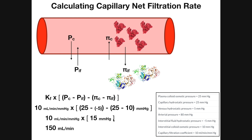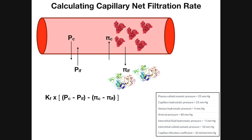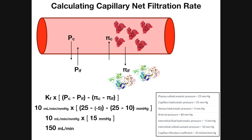What we just calculated is the net filtration pressure. The stuff in the brackets represents the net filtration pressure, and the rule is: if you know the net filtration pressure, you multiply by the capillary filtration coefficient to get the net filtration rate. So we take our net filtration pressure of 15 millimeters of mercury times k sub f of 10 milliliters per minute per millimeter of mercury — the millimeters of mercury units cancel — giving us 150 milliliters per minute as our net filtration rate.